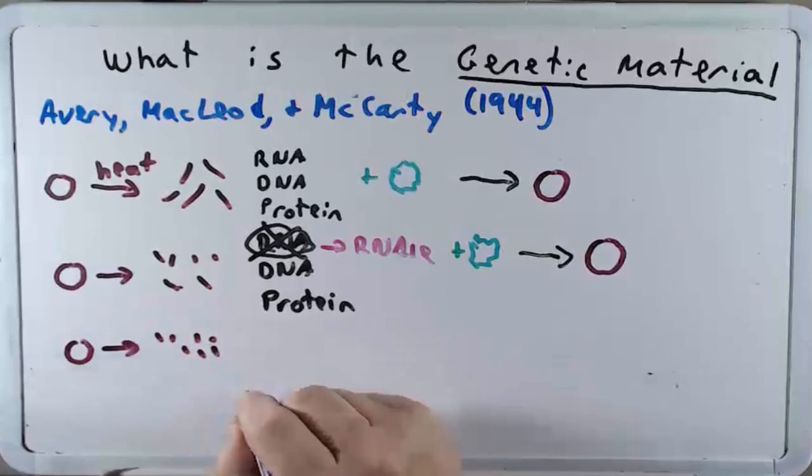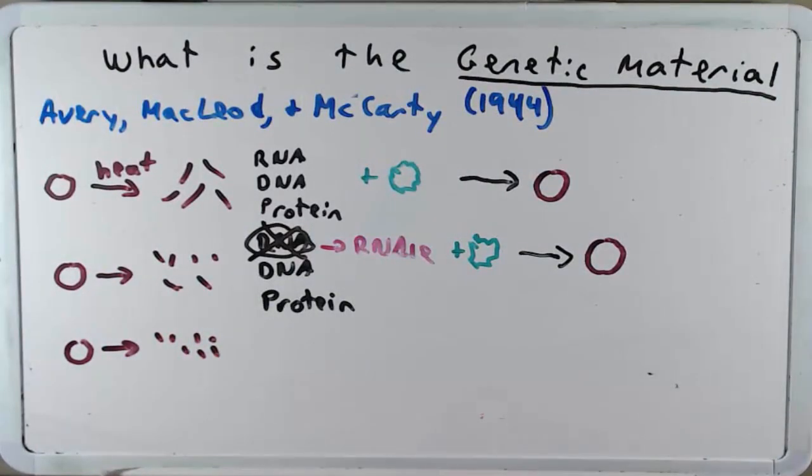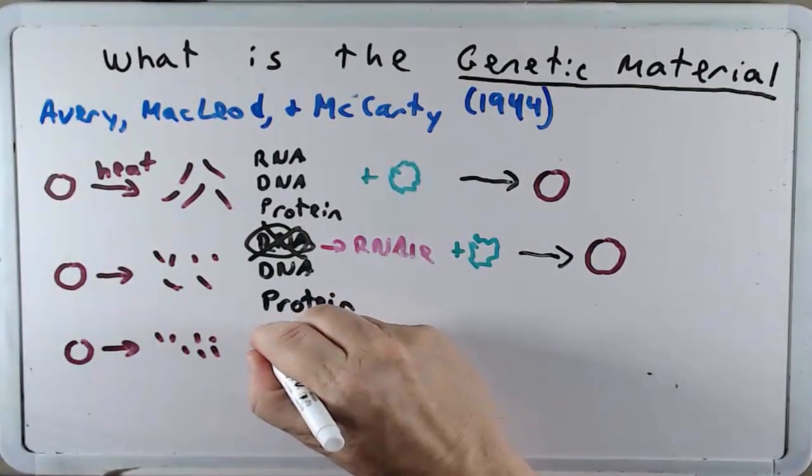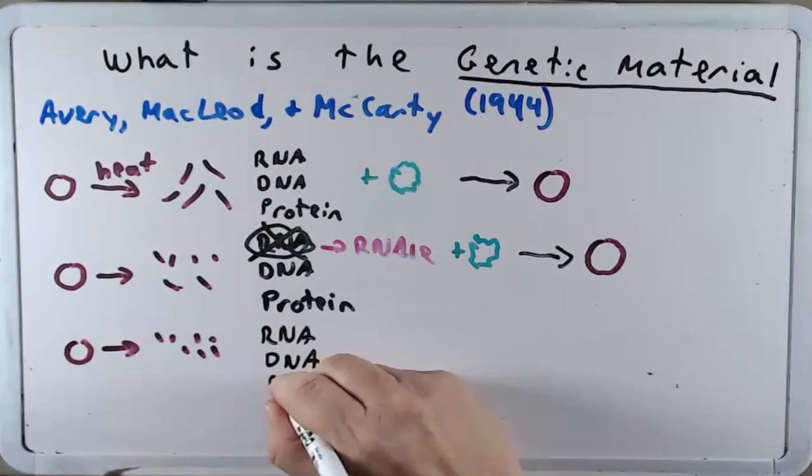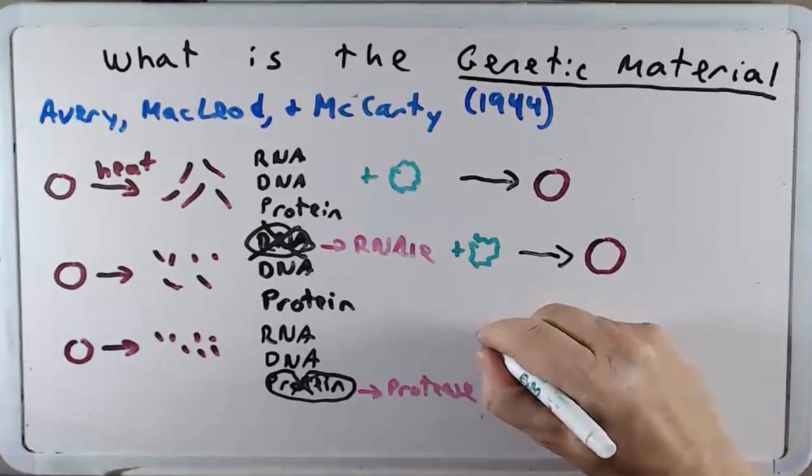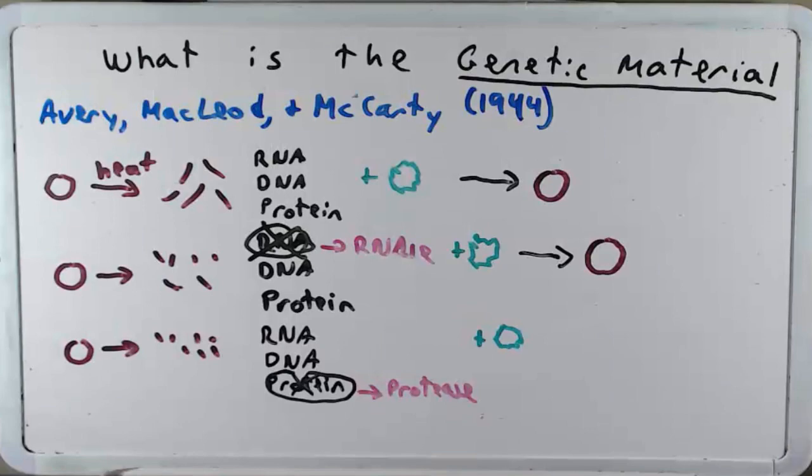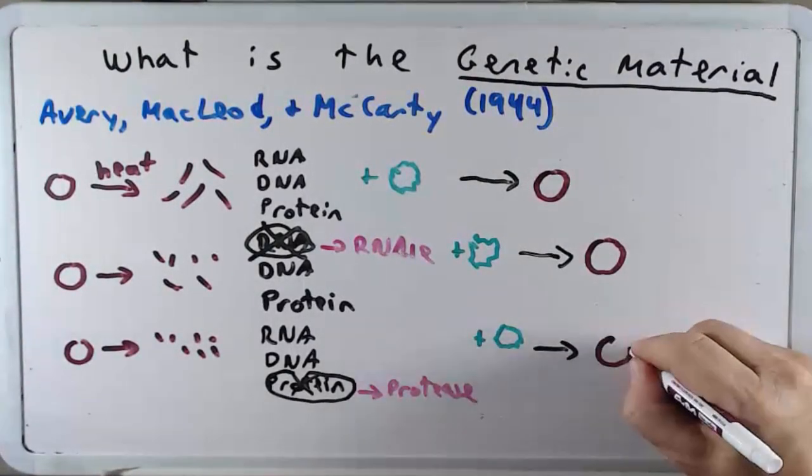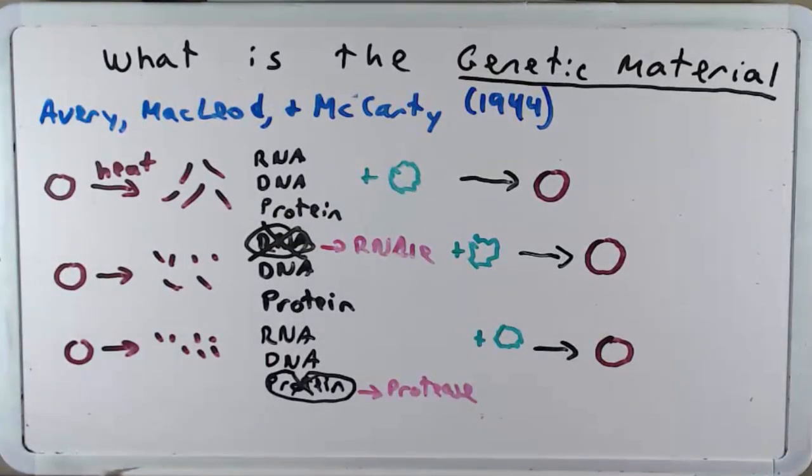They did it one more time. They heated it up. And this time what they did was, instead of getting rid of the RNA, they got rid of the protein. And they did that with an enzyme called protease, just an enzyme that degrades the protein. They then added the rough bacterium. And what they discovered was, indeed, transformation once again occurred. And if they were to put that into a mouse, the mouse would have, of course, died.